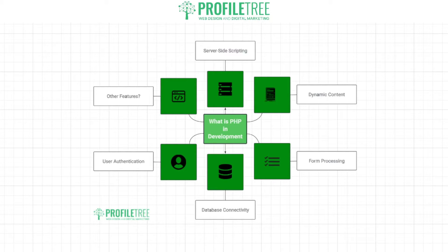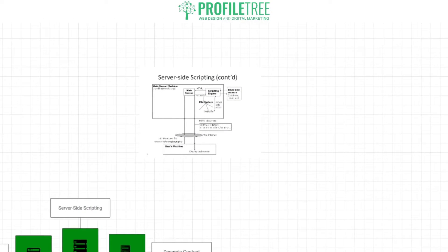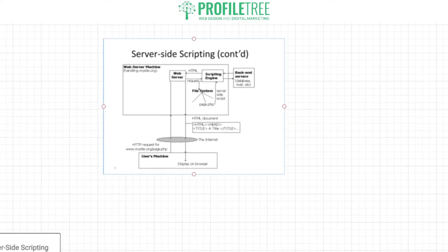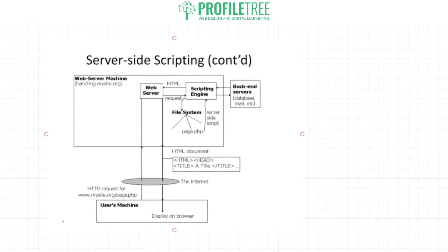It's easier to understand with a diagram. Here we have our web server machine — we've got our HTML, which creates a request to the scripting engine, then goes to the backend servers. That's all your database, mail, anything related to that. So if a user sends out mail, it goes directly to the backend, into the scripting engine, then to HTML on your web server. The scripting engine also has your file system — so PHP, all your different PHP pages — and that's where the server-side script lives.